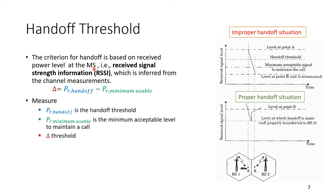The criterion for handoff is based on the received power level at the mobile station. The RSSI — Received Signal Strength Indicator — is inferred from channel measurements, and most mobile phones give an indication of signal power strength. There is a minimum usable value for this power, below which we cannot communicate. We define a handoff threshold which is above that minimum; the difference between these two is called delta, the threshold.